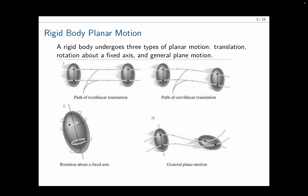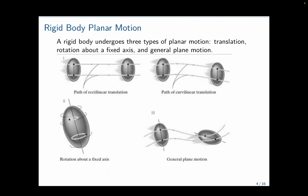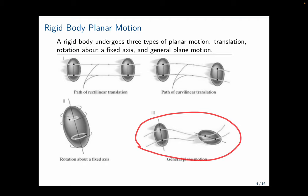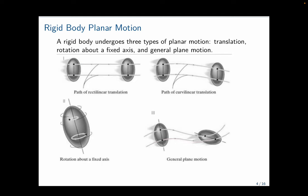Remember rigid body planar motion includes different types. Rectilinear translation has no rotation about the body, and curvilinear translation keeps a vertical line vertical throughout — two points do not move relative to each other in the rigid body. In pure rotation, the body is not translating; a point returns to its original position after one turn, rotating about a fixed axis. In general plane motion, the body translates and rotates simultaneously, and the movement can be decomposed into both.